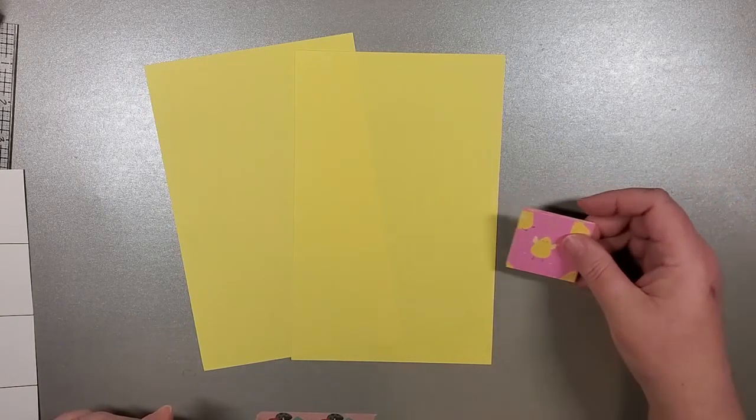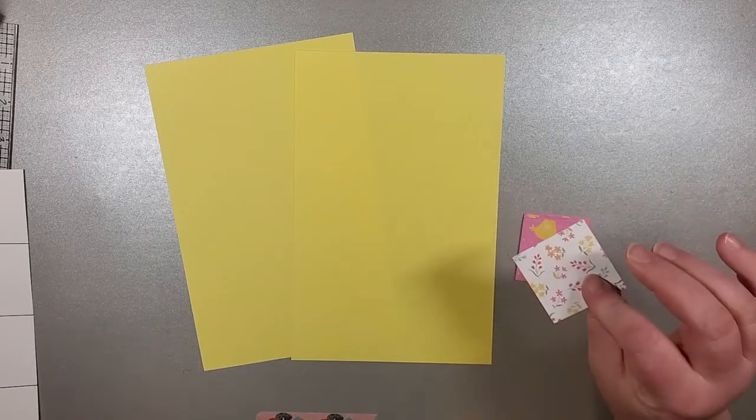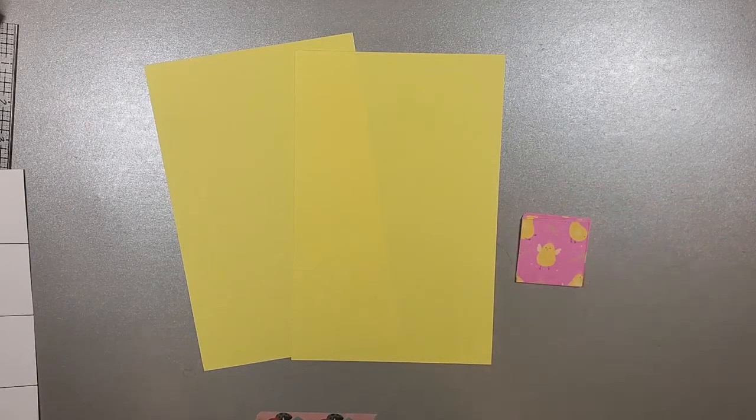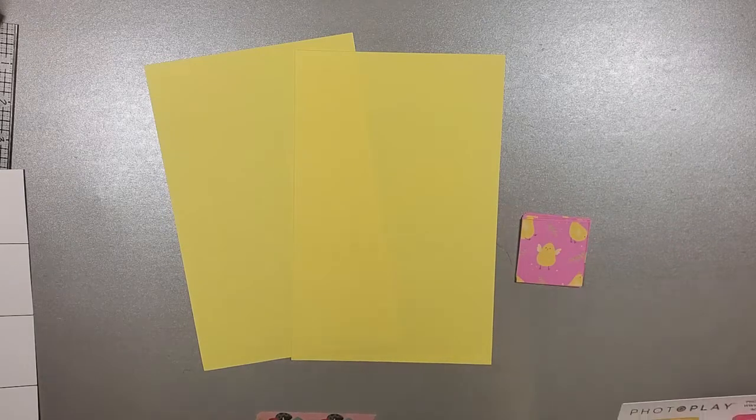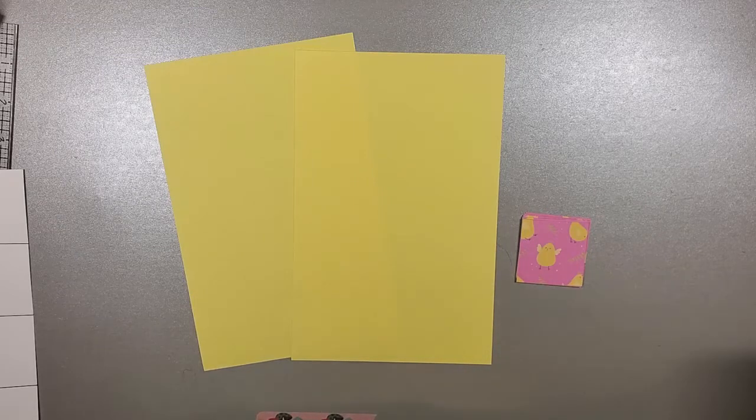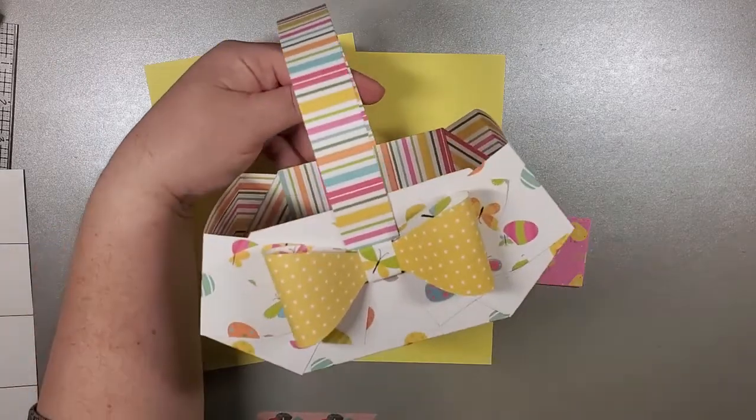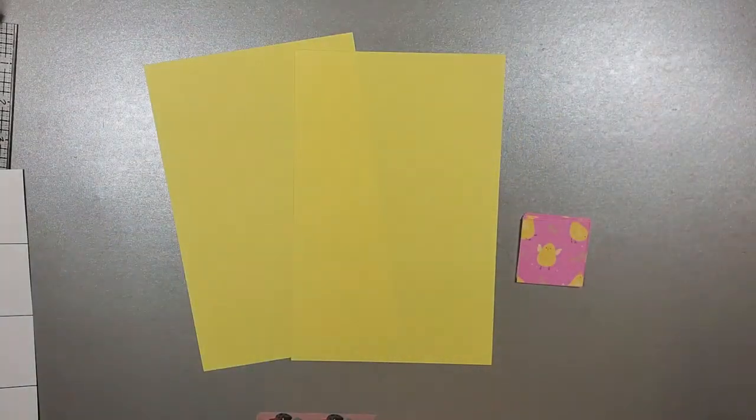We are going to be using some of our stinking cute Hop to It paper. This is double sided, so we've got our cute little Easter chicks. There are so many fun sheets of paper and cardstock in this collection. I used some yesterday when we were making our basket, our cute little basket with the Easter eggs on the outside and the lovely stripe on the inside.